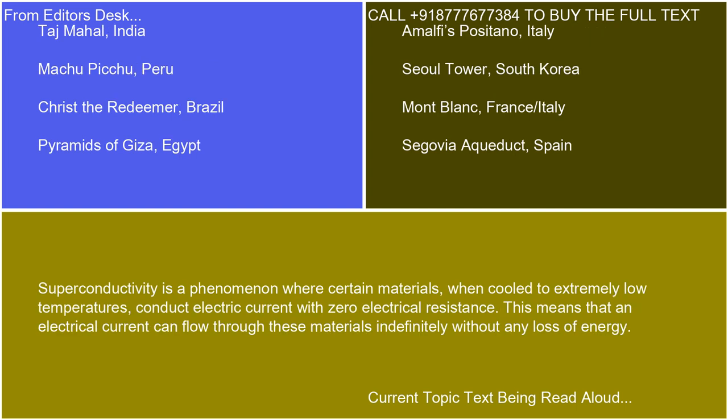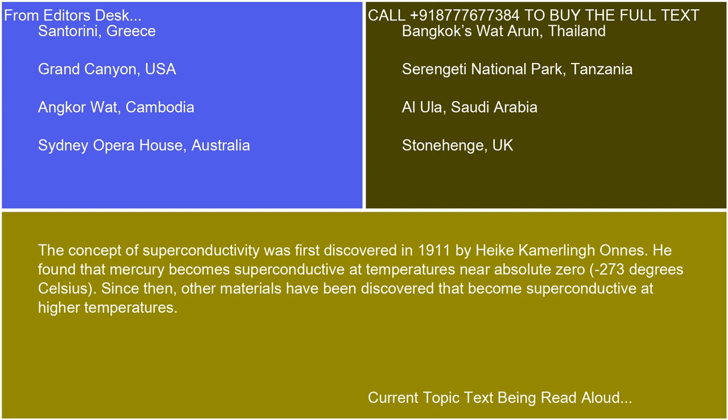Superconductivity is a phenomenon where certain materials, when cooled to extremely low temperatures, conduct electric current with zero electrical resistance. This means that an electrical current can flow through these materials indefinitely without any loss of energy. The concept of superconductivity was first discovered in 1911 by Heike Kamerlingh Onnes. He found that mercury becomes superconductive at temperatures near absolute zero, minus 273 degrees Celsius. Since then, other materials have been discovered that become superconductive at higher temperatures.